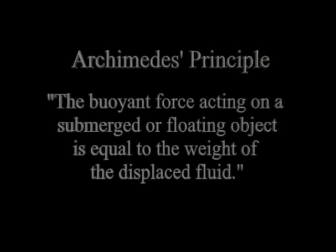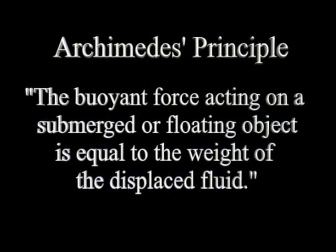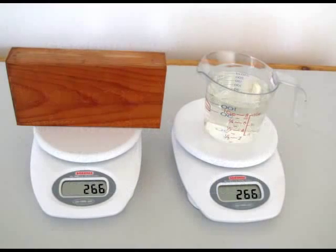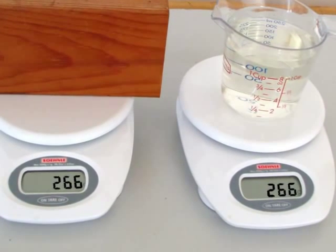This is not a coincidence. This is Archimedes' Principle. The weight of the displaced liquid equals the weight of the floating object. Or, more precisely, the buoyant force acting on a submerged or floating object is equal to the weight of the displaced fluid. Our floating wooden block weighs 266 grams, and the water displaced by the floating block also weighs 266 grams. We know that the floating wood block displaces its own weight in water.